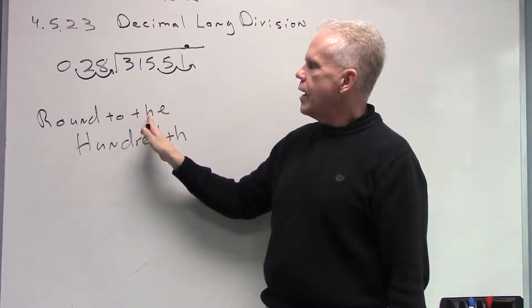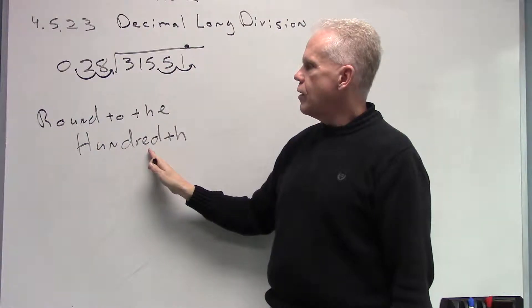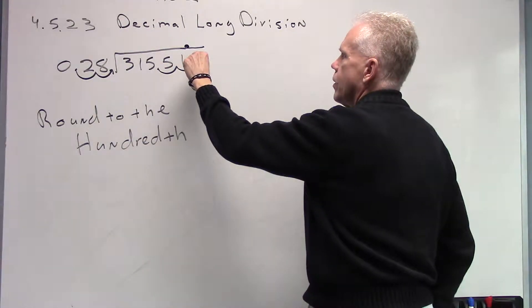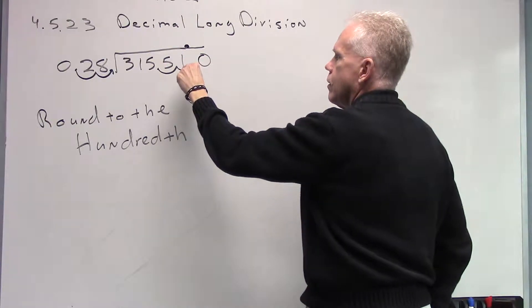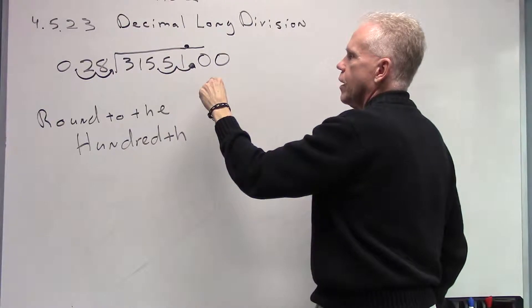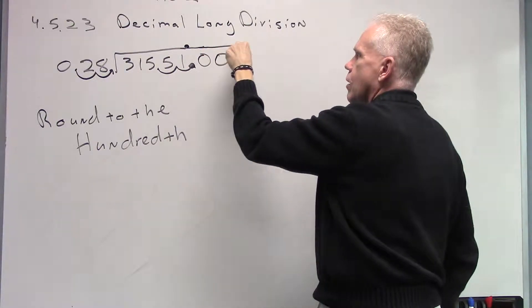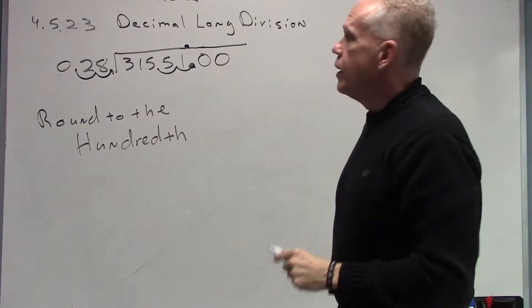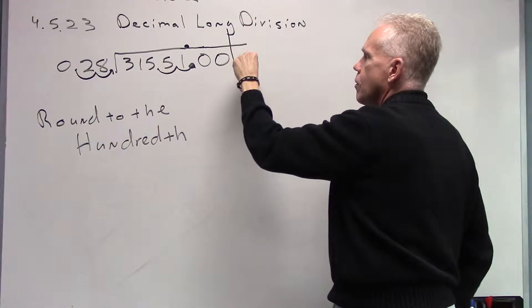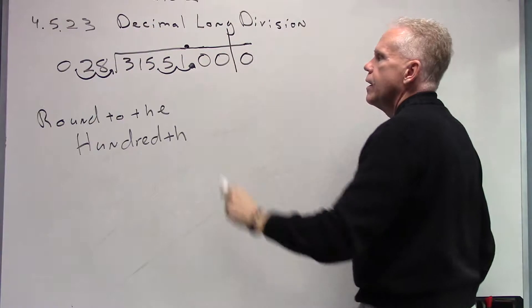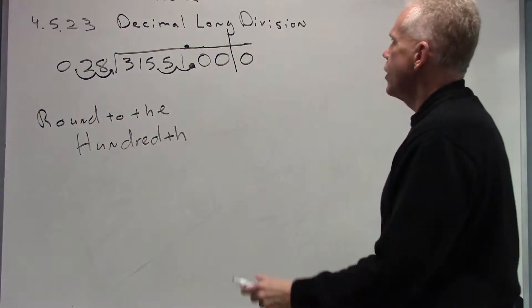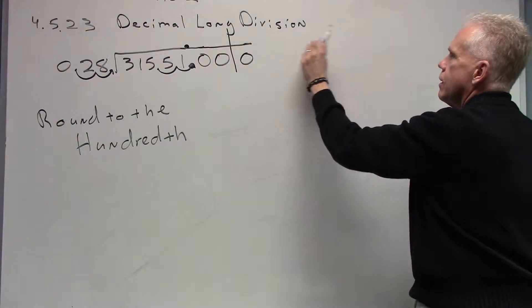We want to round our quotient to the nearest hundredth. So we'll add a couple of zeros after the decimal: the first decimal place will be the tenths, the second will be the hundredths. Since we want to round the hundredths, we draw a line there and add one more zero past it, so we know where to stop and what digit to use for rounding.